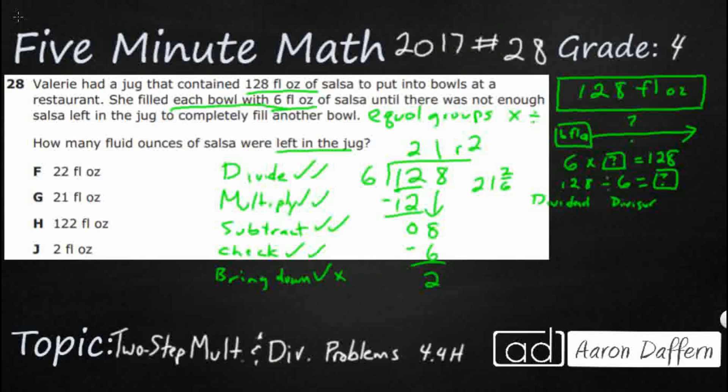And so what does this really mean? This really means that we took our 128 and what we did is we filled in. Let's see if I can draw. So here are 21. Let's pretend these are bowls and inside each of these are going to be six ounces.